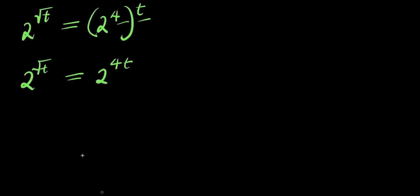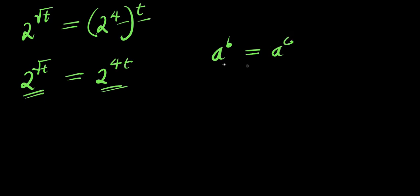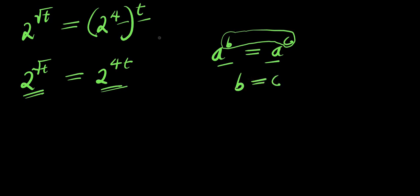At this point, the base on both sides is the same. Using the identity: if a^b = a^c, then b = c — when two bases are equal, we can equate the exponents. Applying that identity here, we equate the exponents.